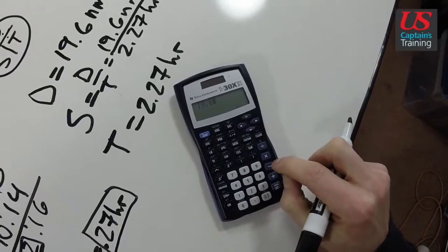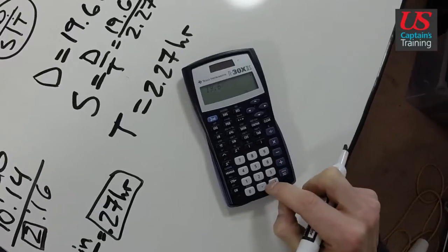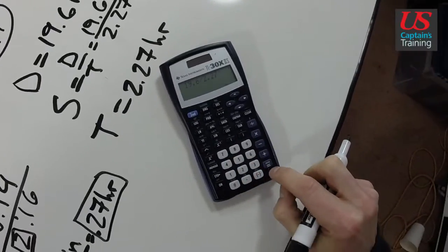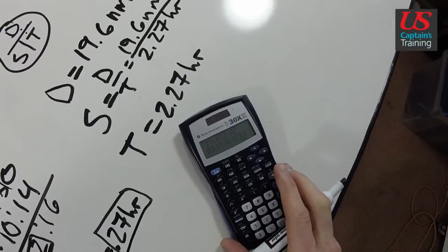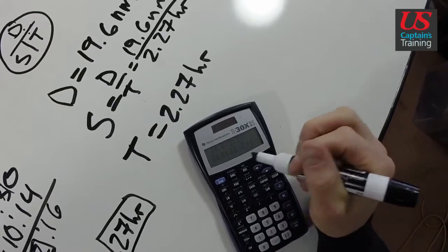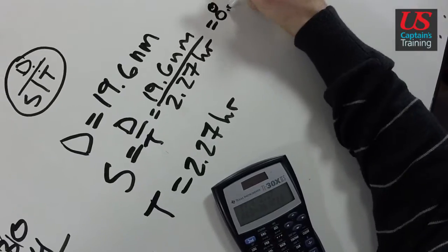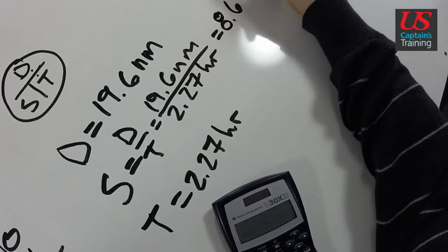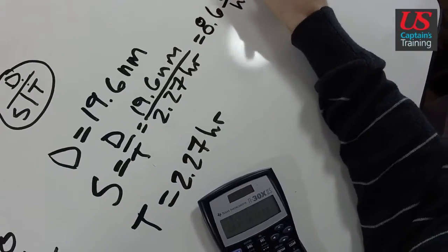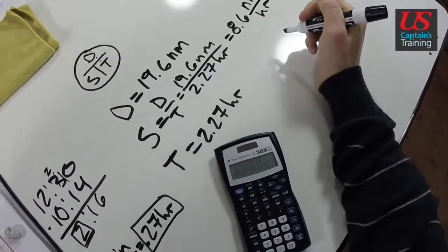19.6 nautical miles divided by 2.27 hours equals 8.63, so we say 8.6 nautical miles per hour. 8.6 nautical miles per hour, which is equal to 8.6 knots.